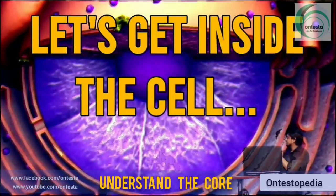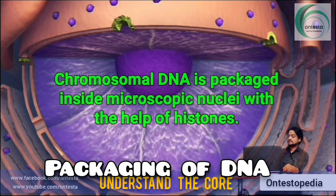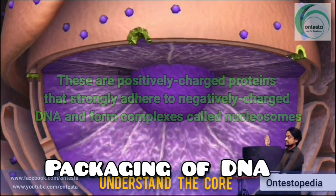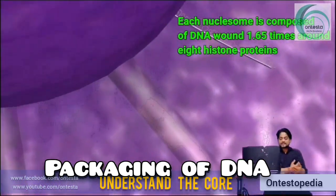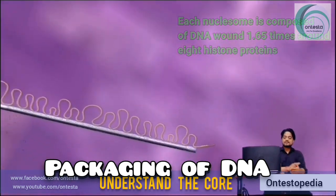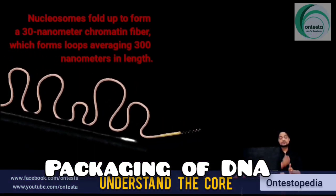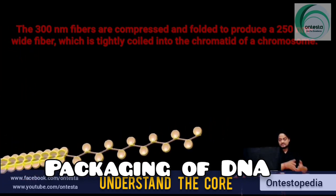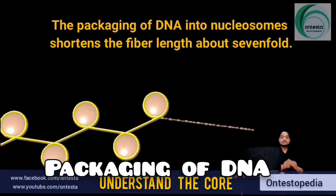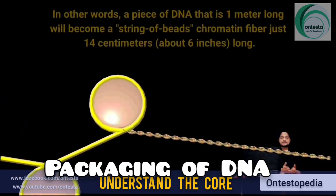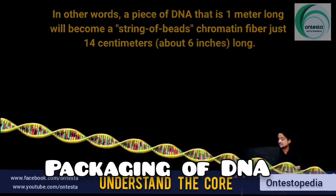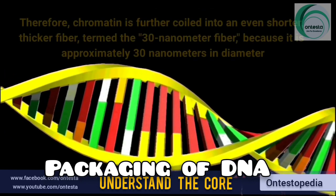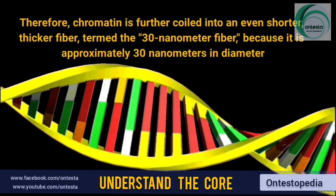Now let's get inside the cell and understand the packaging of DNA. Chromosomal DNA is packaged inside the microscopic nucleus with the help of histones — positively charged proteins that strongly adhere to negatively charged DNA to form nucleosomes. Each nucleosome is composed of DNA wound 1.65 times around 8 histone proteins. Nucleosomes fold up to form a 30 nanometer chromatin fiber, which forms loops averaging 300 nanometers in length. These 300 nm fibers are compressed and folded to produce 250 nm wider fibers, which are coiled into a chromatid.